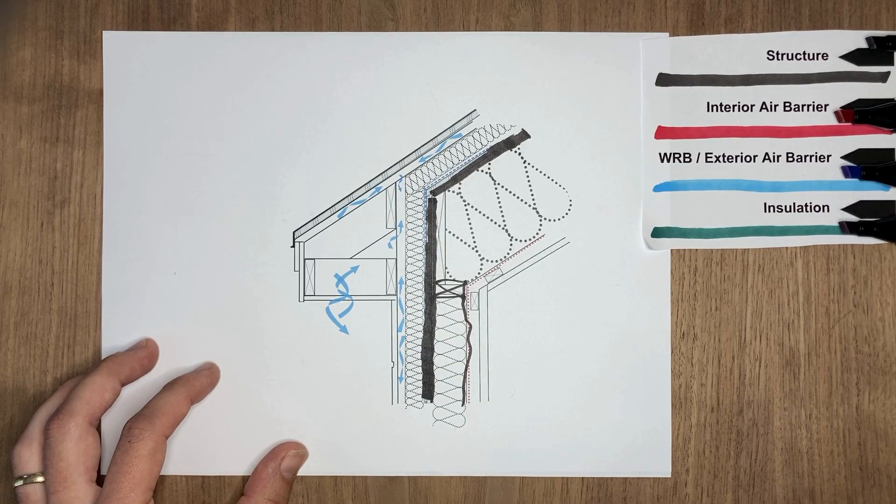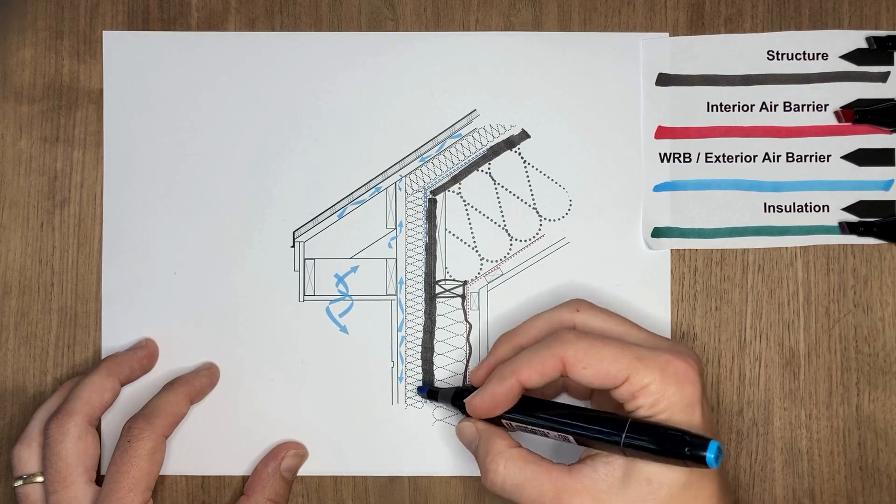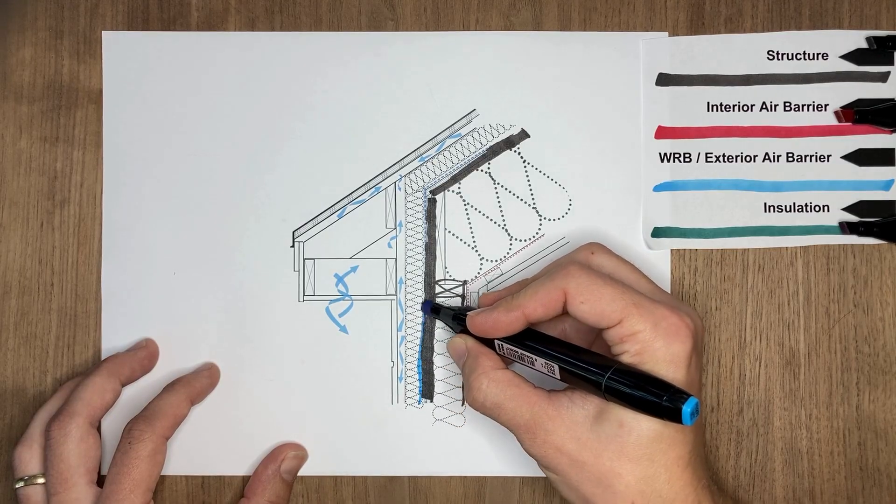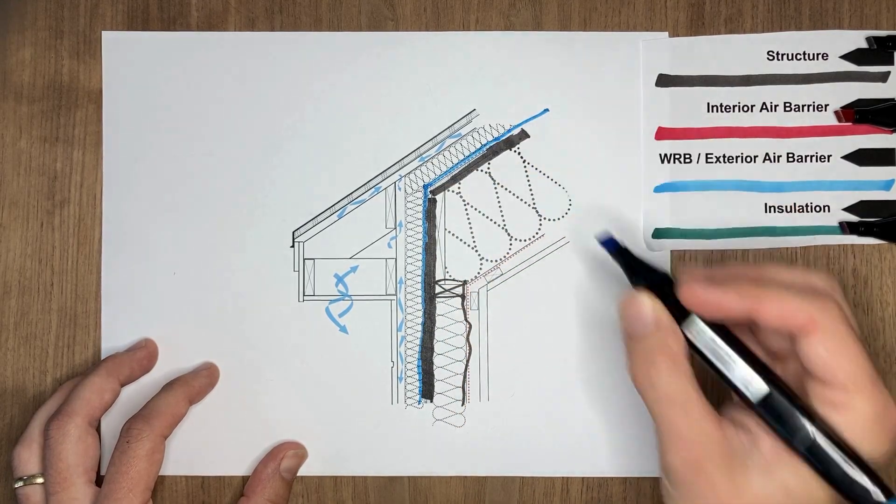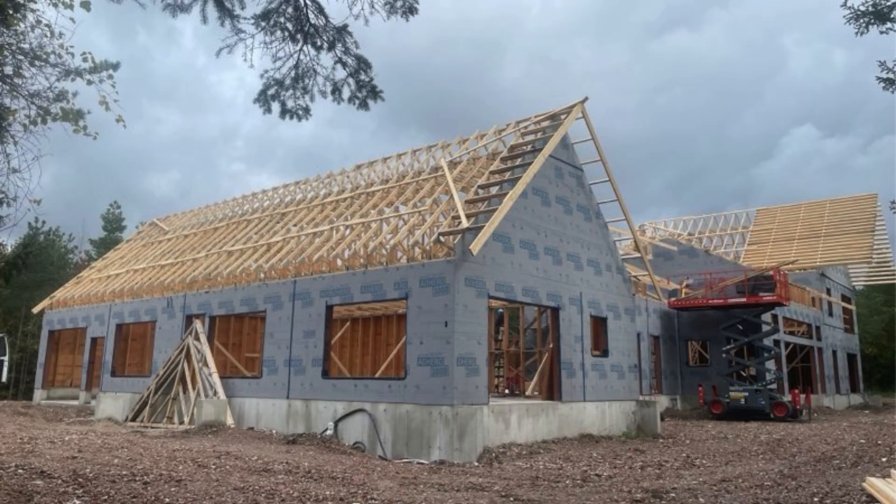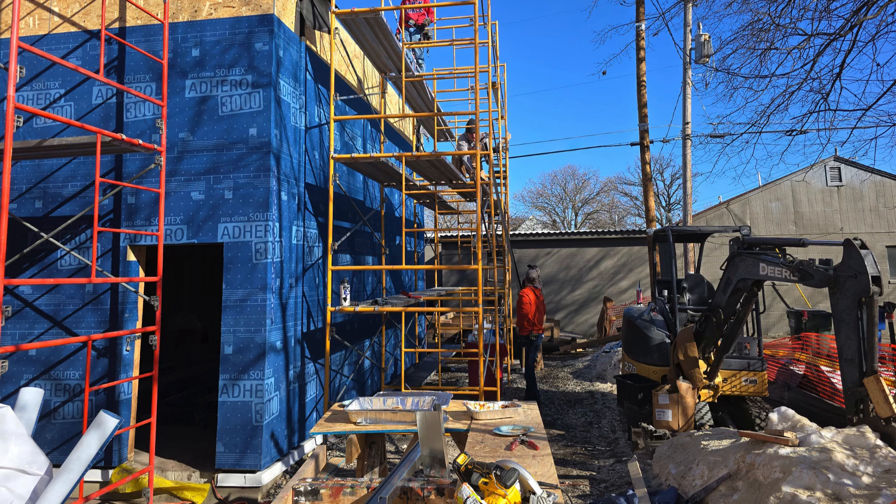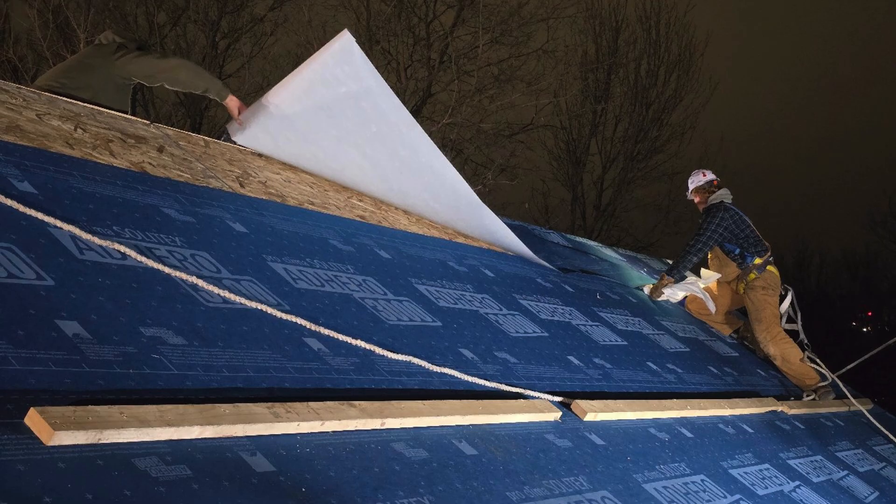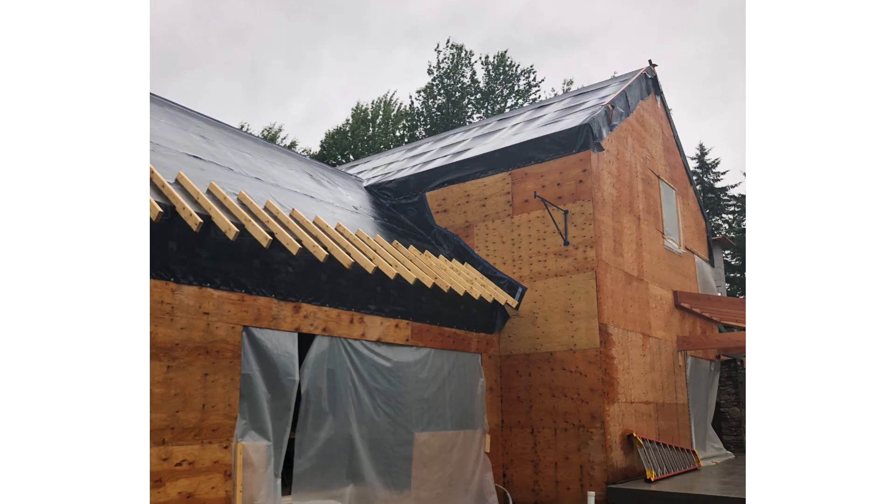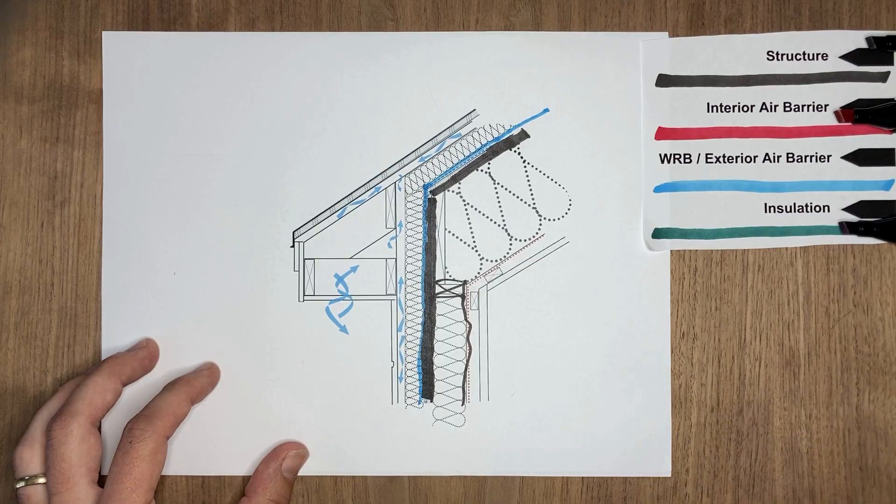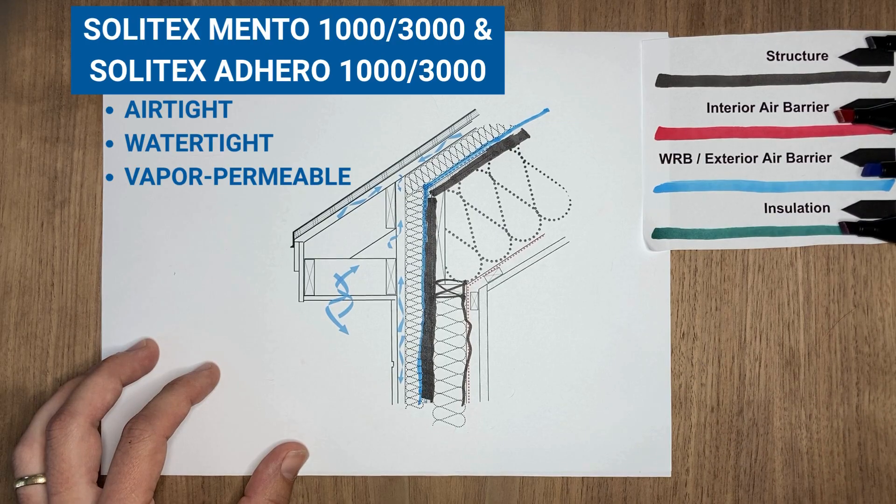We can then waterproof on the exterior with something that's airtight, watertight, and vapor open. This would be the Solotex Adhero 1000 or 3000 on the walls, or Adhero 3000 for the pitched roof, or Mento 1000 for the walls, and then Mento 3000 for the pitched roof. These membranes are all airtight, watertight, and vapor permeable, vapor open.